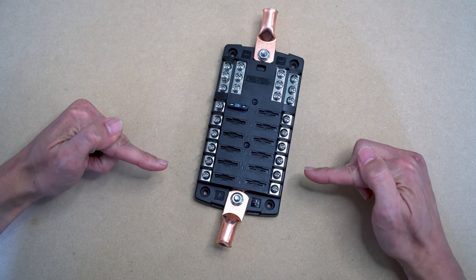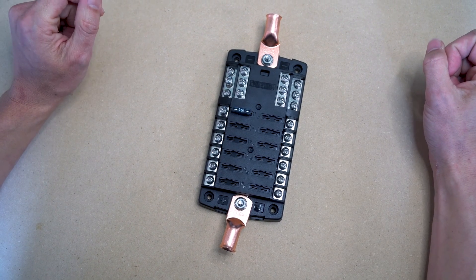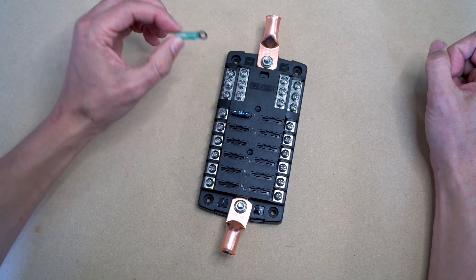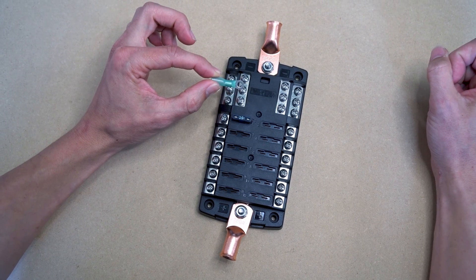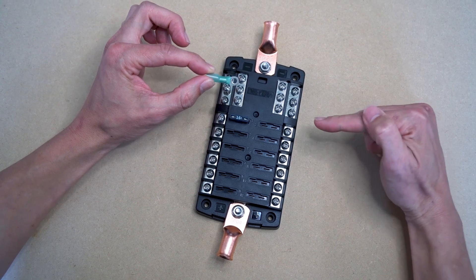For the branch circuits that lead to each individual device, you will need number 8 sized ring connectors. Here we have a number 8 connector that fits 14 to 16 gauge wire.